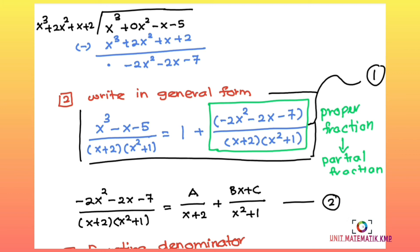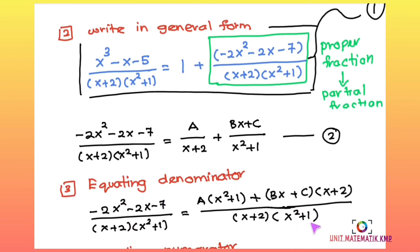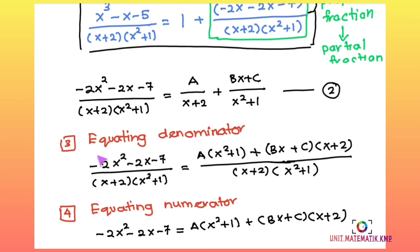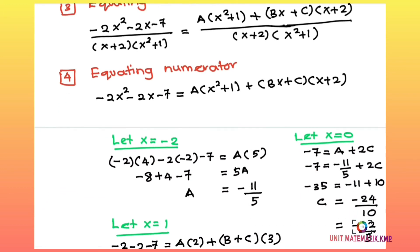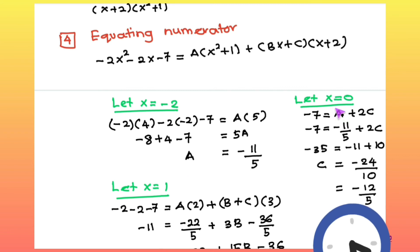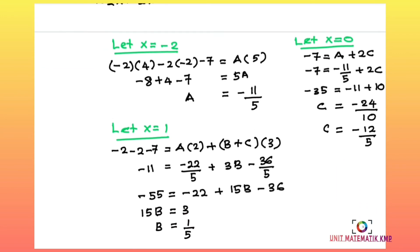After equating denominators and then equating numerators, we use the substitution method to find A, B, and C. Substituting x = −2 gives A = −11/5. Substituting x = 0 gives C = −12/5. Substituting x = 1 gives B = 1/5.